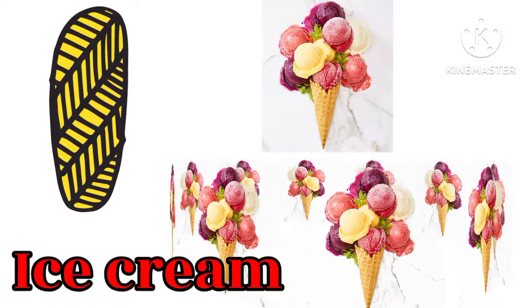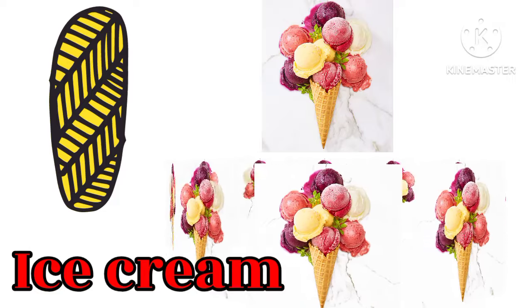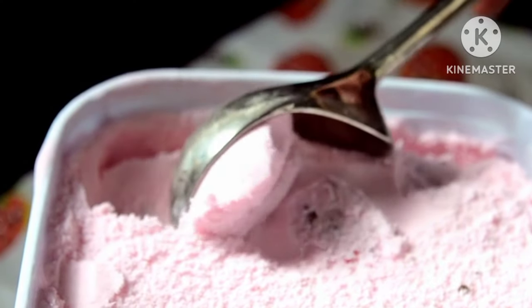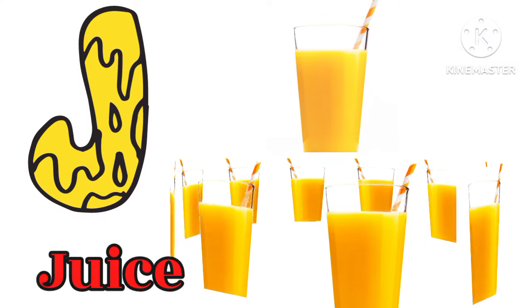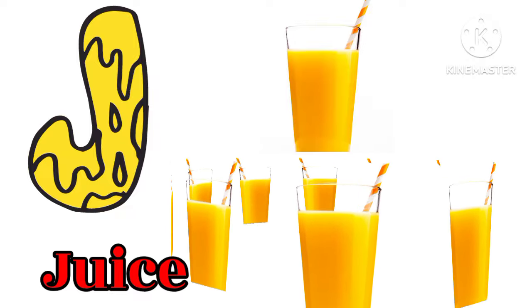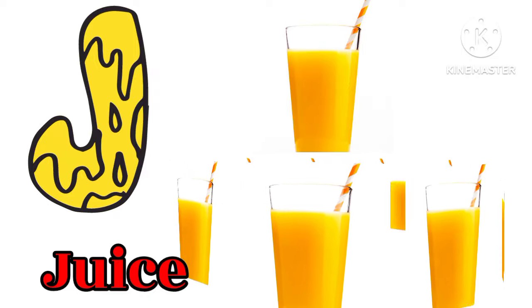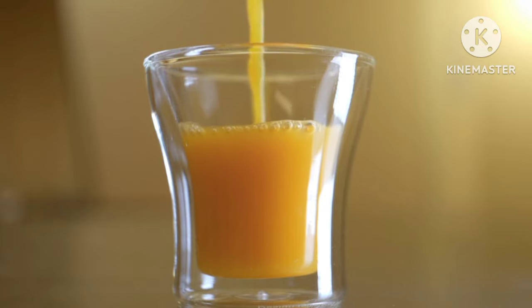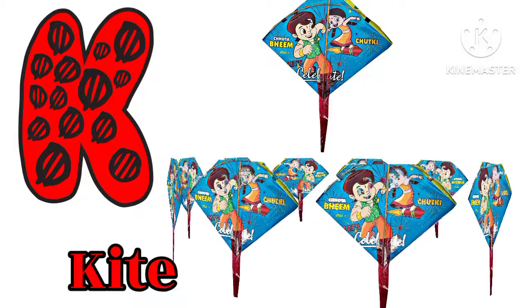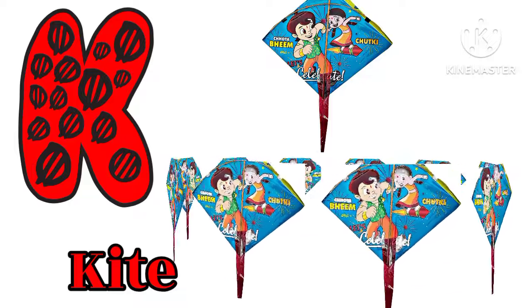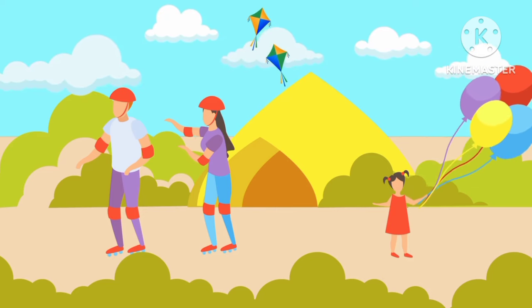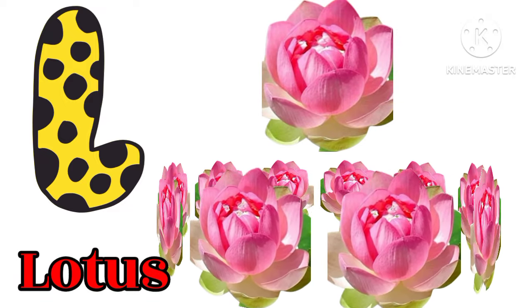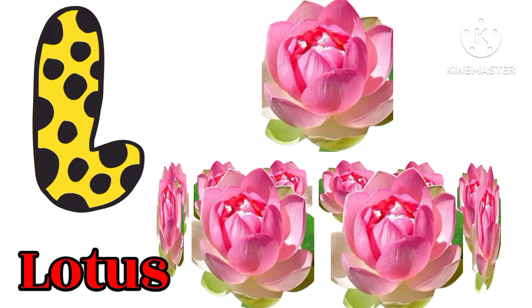I for Ice Cream — Ice Cream means Ice Cream. J for Juice — Juice means Juice. K for Kite — Kite means Patan.